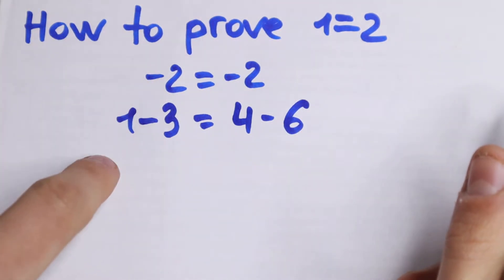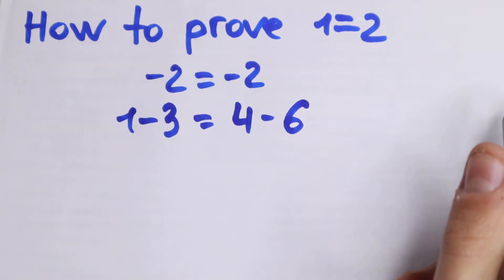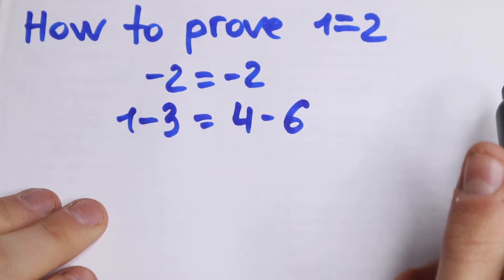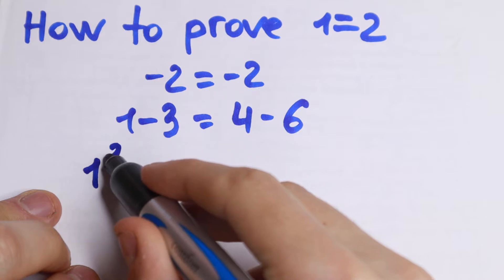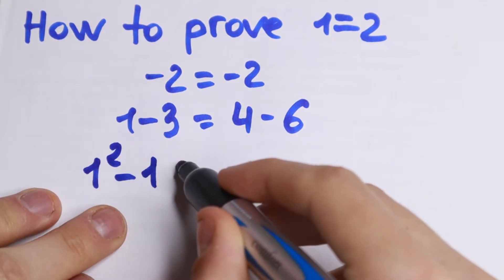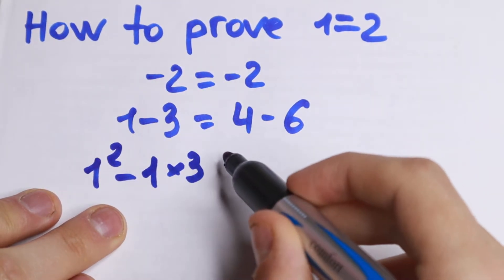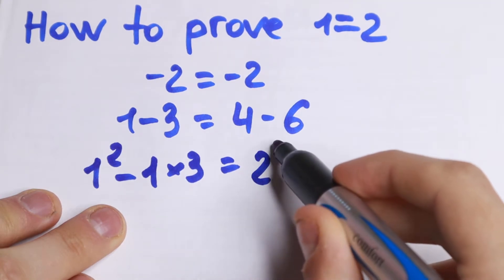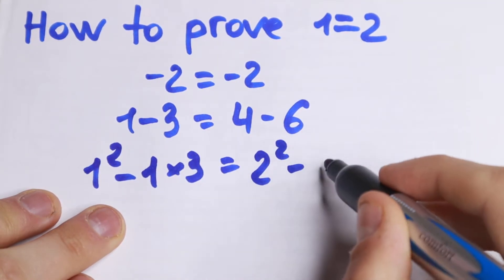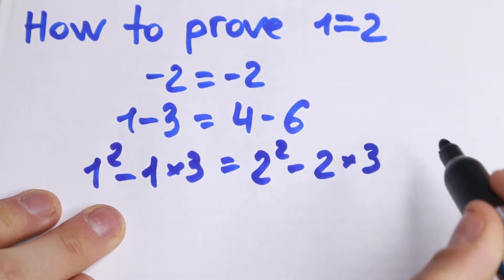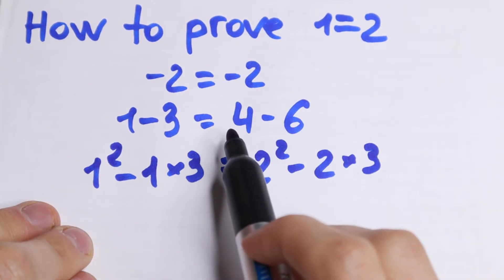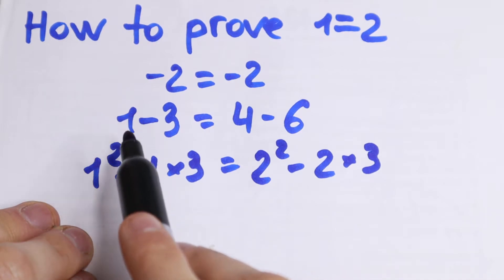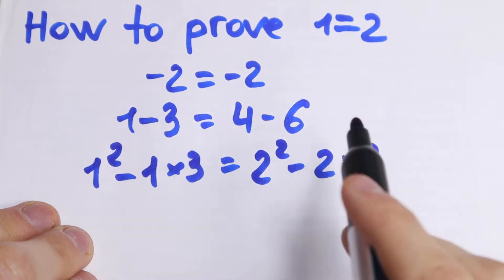I just write this minus 2 as 1 minus 3, and this minus 2 as 4 minus 6, so nothing changes. But take a look — this 1 can be written as 1 squared, so I write it as 1 squared minus 1 times 3, and this 4 I write as 2 squared minus 2 times 3. I just write this 6 as 2 times 3, this 4 as 2 squared, this 1 as 1 squared, and this 3 as 1 times 3 as well.